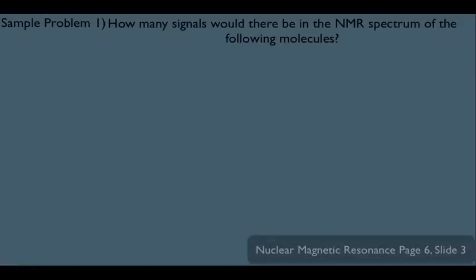Here's sample problem one. It says, how many signals would there be in the NMR spectrum of the following molecules? Basically, we need the ability to look at a molecule and make a prediction of how many peaks we might find in the NMR data. For this section, we're specifically focusing on HNMR, which means we want to know how many signals there would be for a molecule due to the different types of H atoms it contains.